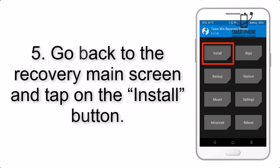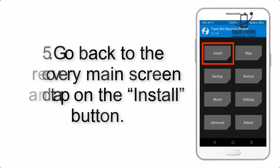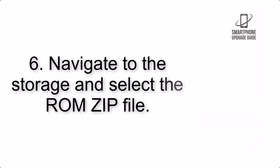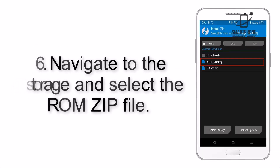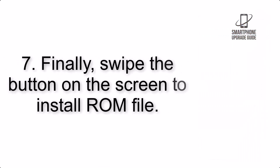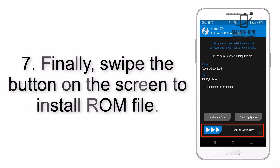Step 5: Go back to the recovery main screen and tap on the Install button. Step 6: Navigate to the storage and select the ROM zip file. Step 7: Finally, swipe the button on the screen to install the ROM file.